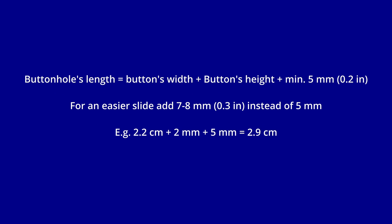In my example, my button's width was 2.2 centimeters, my button's height was 2 millimeters, and I added 5 millimeters to all this, which is 2.9 centimeters. I should have rounded it to 3 centimeters, but I don't know why I kept going with 2.9.